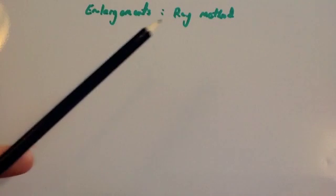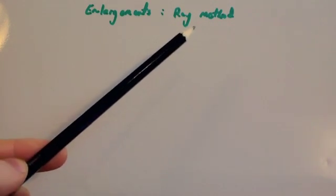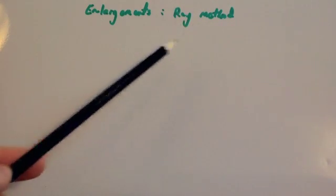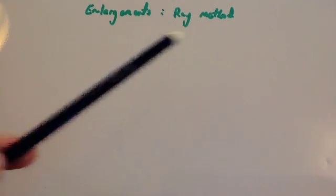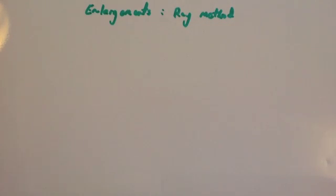I find the Ray method useful whenever there is no coordinate grid given to you. So my first example I would really use the Ray method for. My second example in this video, I probably wouldn't use the Ray method for. But there's another video I've got called enlargements on a coordinate grid and you can watch that video.